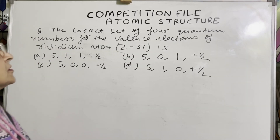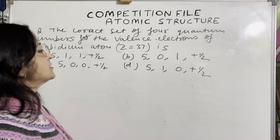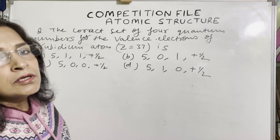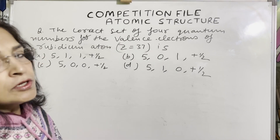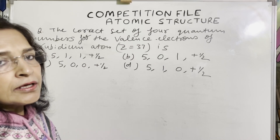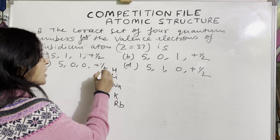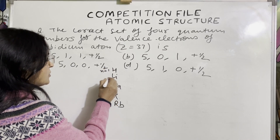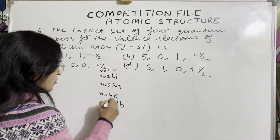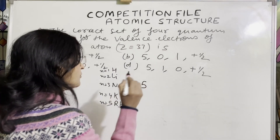Next question: The correct set of 4 quantum numbers for the valence electron of rubidium atom (Z = 37). Rubidium lies in Group 1. Counting shells: n=1, 2, 3, 4, 5 — so the value of the principal quantum number will be 5.